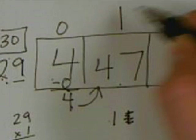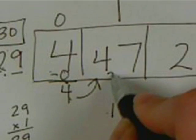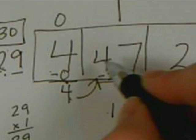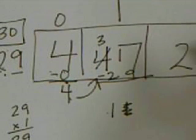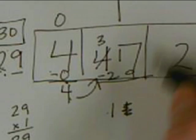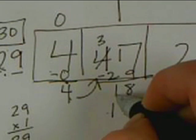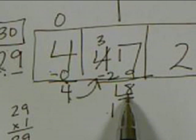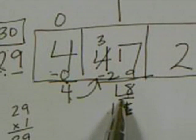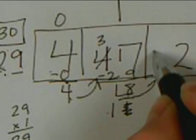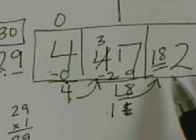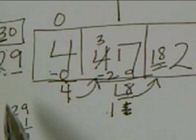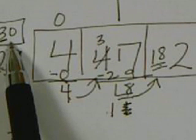29 times 1 is 29, so up at the top we put 1. Then we subtract: we have to take one from a friend — 17 minus 9 is 8, 3 minus 2 is 1 — now we have 18. 18 is smaller than 29, so we know we did the right thing. We've got two digits to move to the next box and we can underline those two digits.